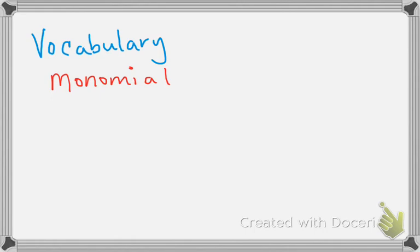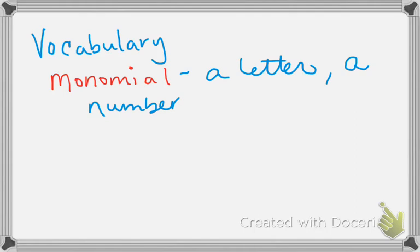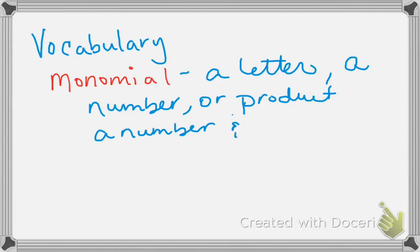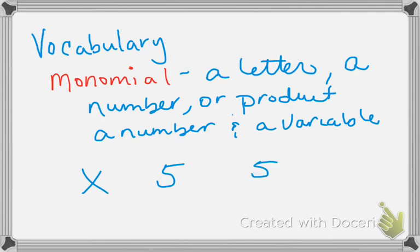We're going to focus on vocabulary for a second. A monomial is a letter, a number, or the product of the two. So a monomial is something like X, a number like 5, or the product — meaning multiply — so we could say 5X. All of those are called monomials.